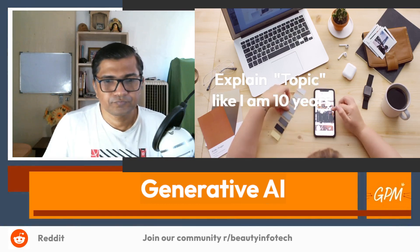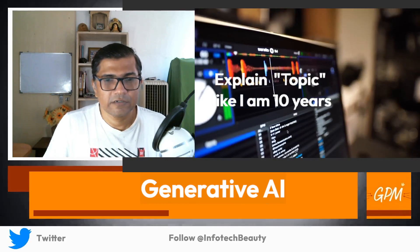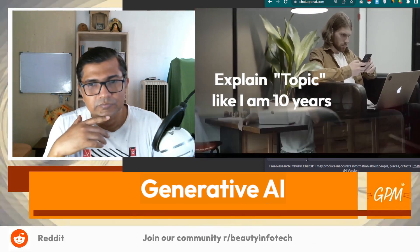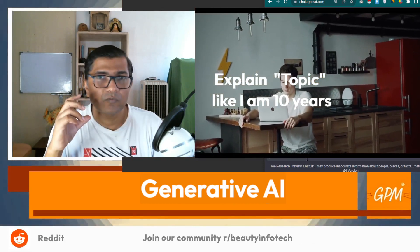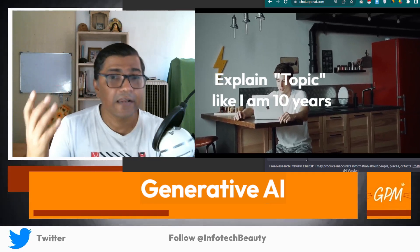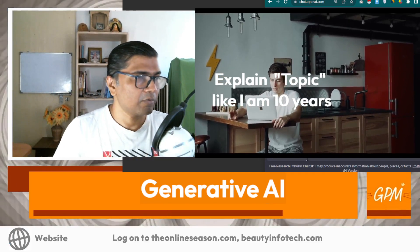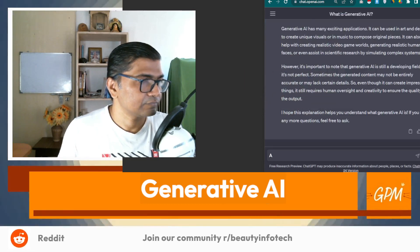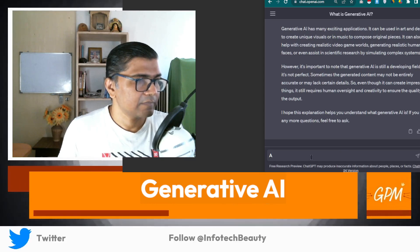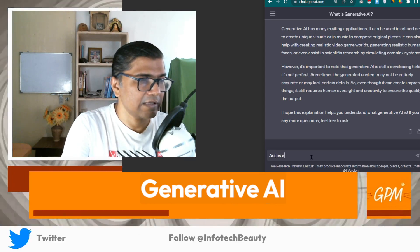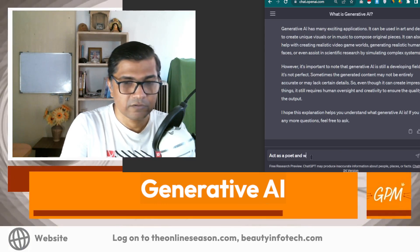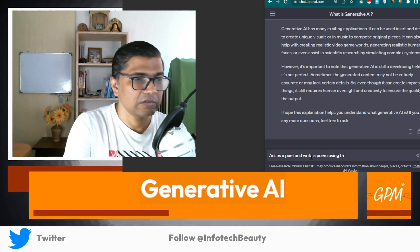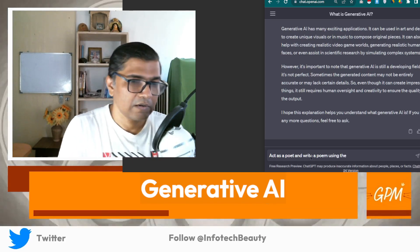Now I want to ask an interesting question to ChatGPT — I want to get one poem to see the creativity of ChatGPT. So I am writing my prompt like this. My prompt is: 'Act as a poet and write a poem using the following.'